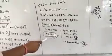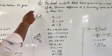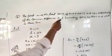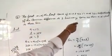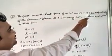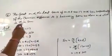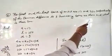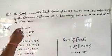Now question number 6: The first and the last term of an AP are 17 and 350 respectively. If the common difference is 9, how many terms are there and what is their sum?